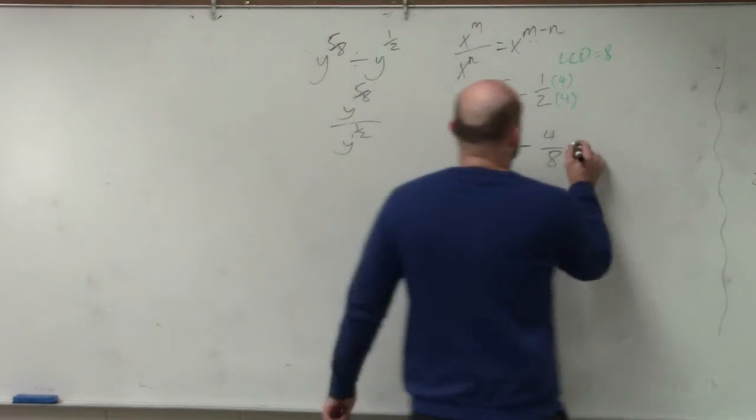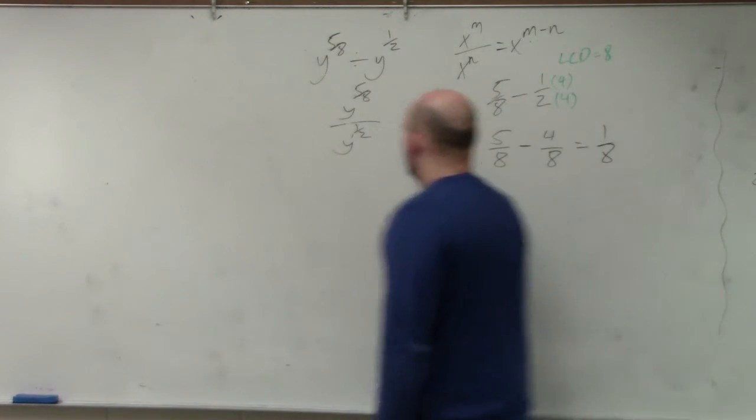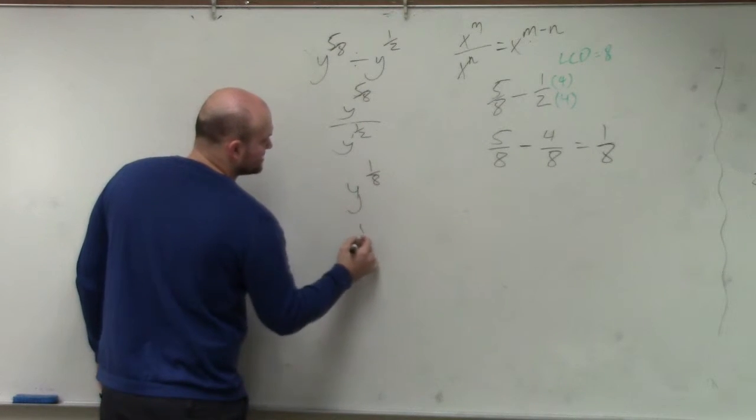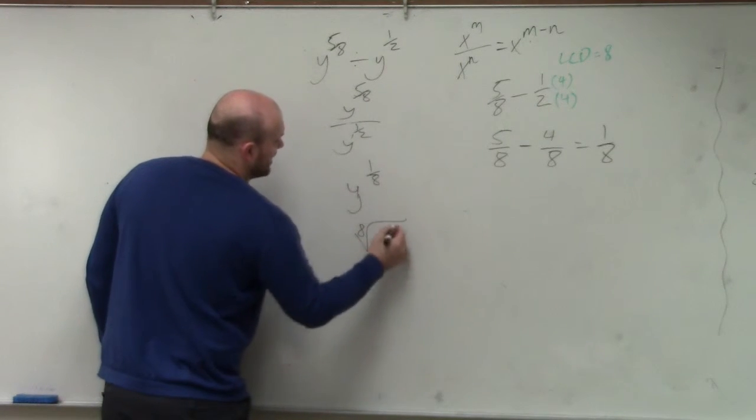Anyways, so therefore, this is going to equal 1 over 8. So I have y to the 1 over 8th power, which if you're going to write this as a radical, is the 8th root of y to the first power.